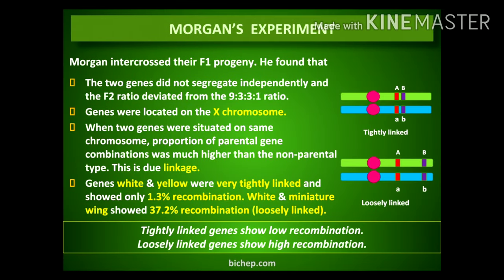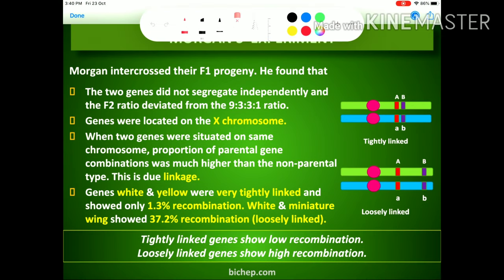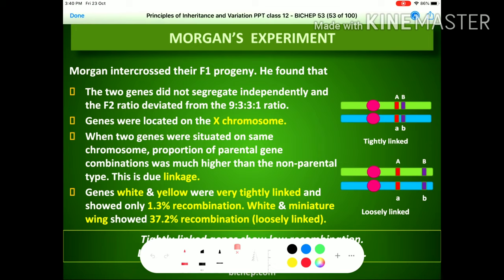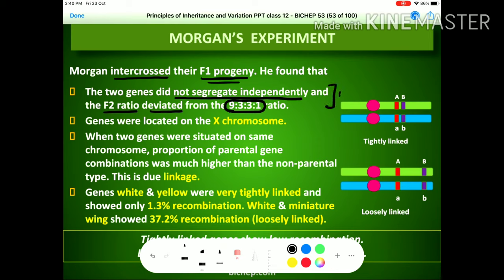To conclude Morgan's experiments: he intercrossed F1 progeny to produce F2 progeny. He found that when two genes did not segregate independently, the F2 ratio deviated from 9:3:3:1 — Mendel's expected ratio could not be found. The reason was that all the genes he considered were located on the X chromosome only.